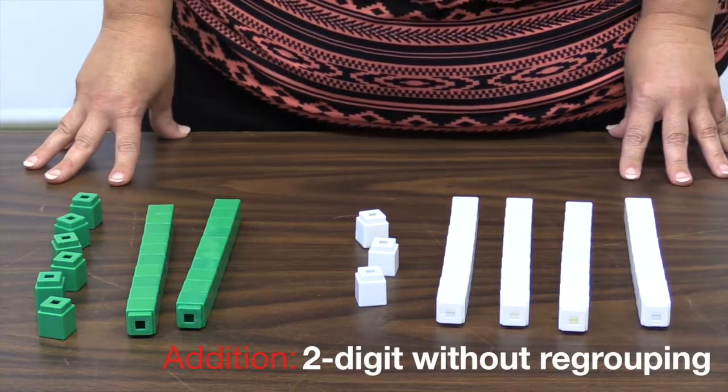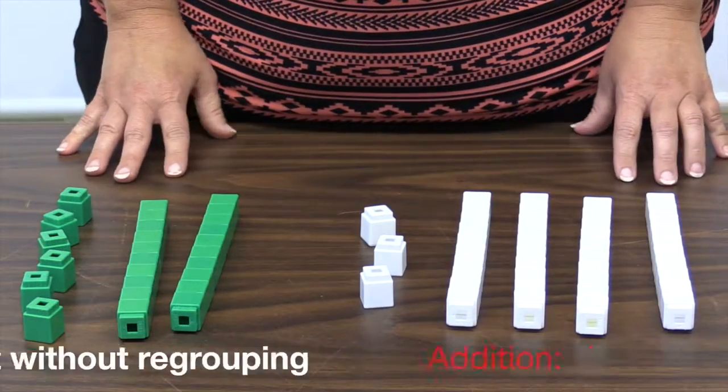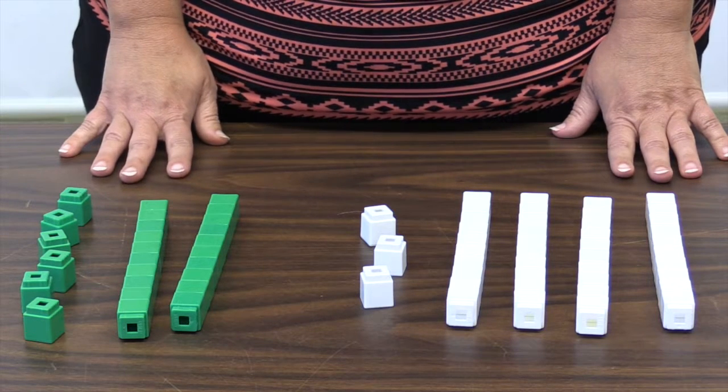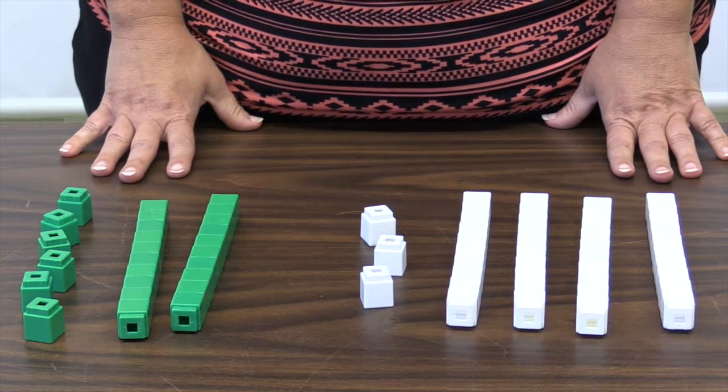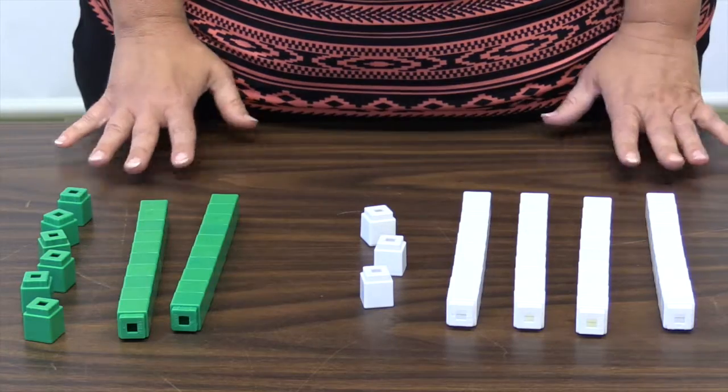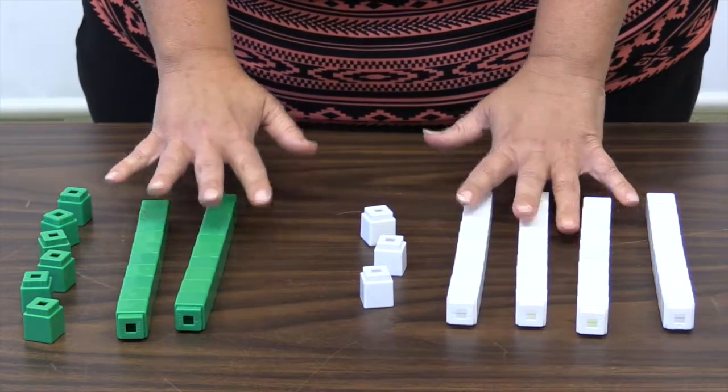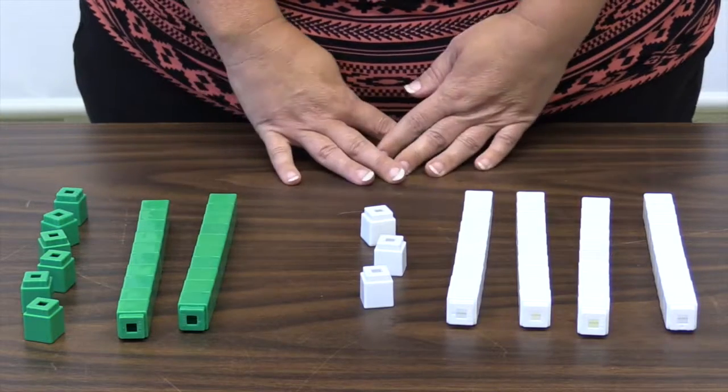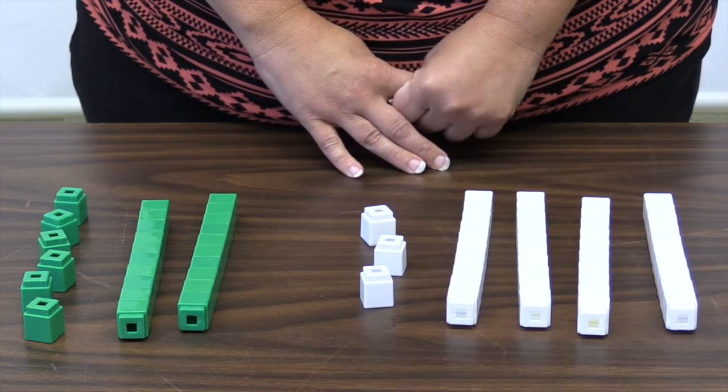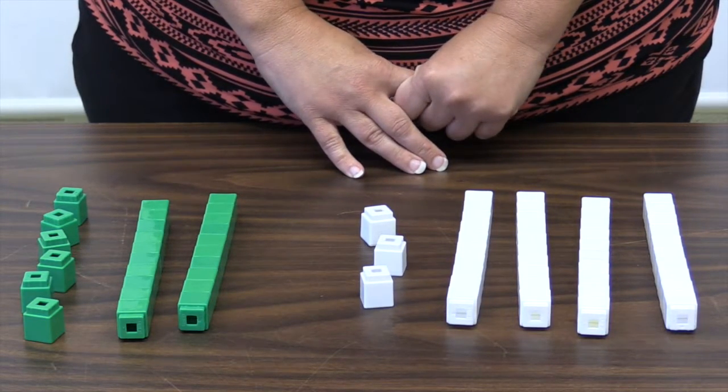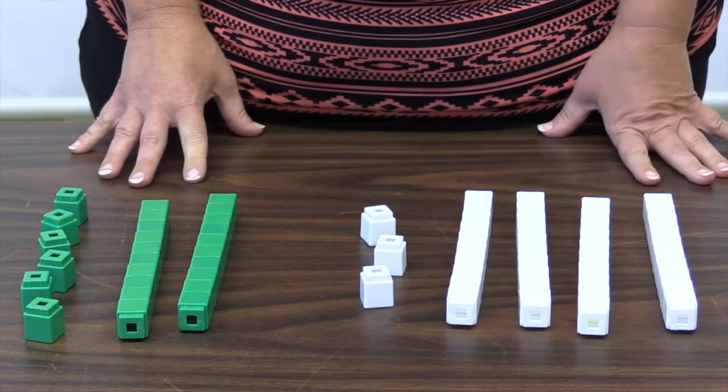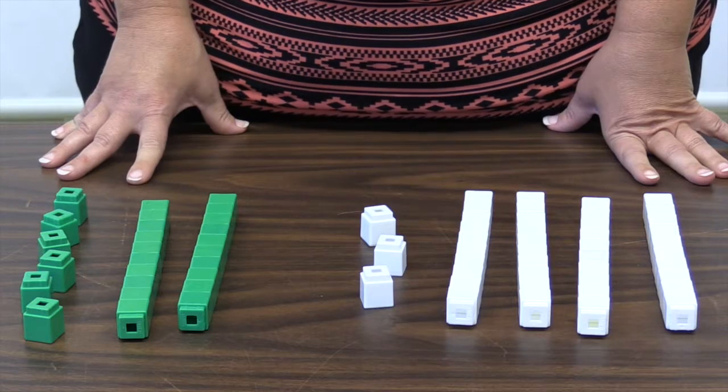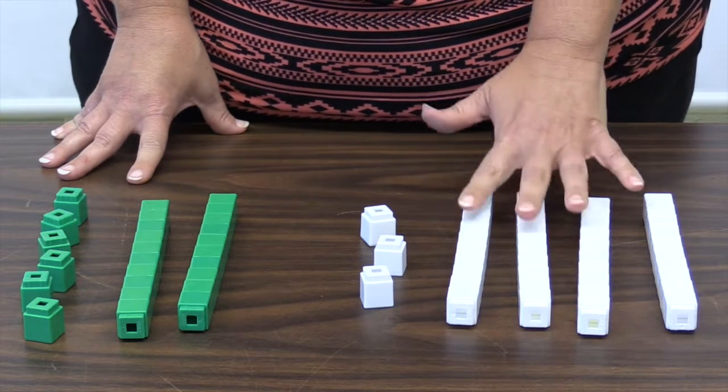Two-digit addition without regrouping. Addition is a composing strategy in which you combine two numbers. To model this, students need to model both numbers in the problem, like 43 plus 26. It is important to model them with a unit that can be taken apart so that students can see the proportional difference between the tens and the ones. The best tool for this is interlocking cubes.